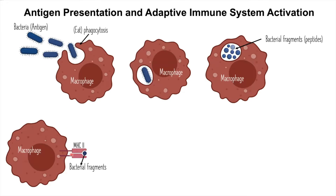So, antigen presentation is the process that happens when the macrophage eats the bacteria and degrades it into peptides, loads them on molecules called major histocompatibility class II molecules, and presents them on its surface.